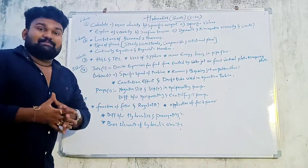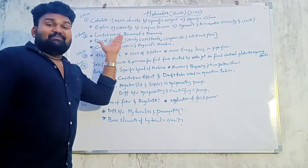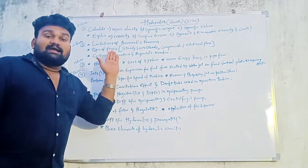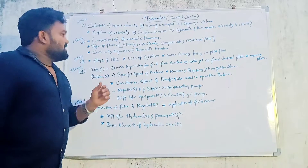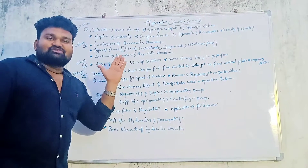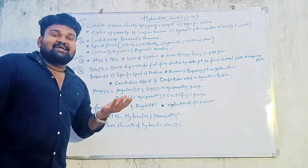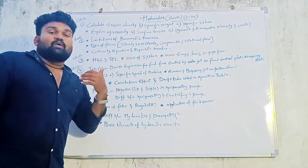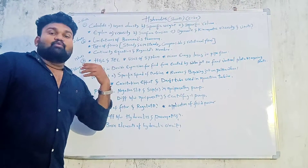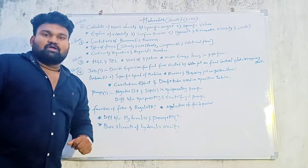Coming to the second chapter. First question: What are the limitations of Bernoulli's theorem? Next, types of flows: What is steady and unsteady flow? What is compressible and incompressible flow? And what is rotational and irrotational flow?